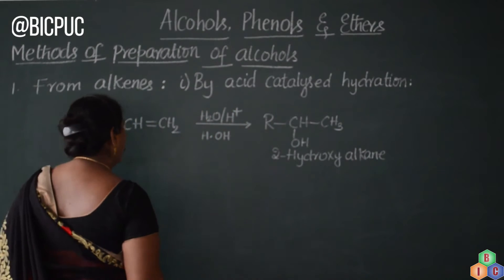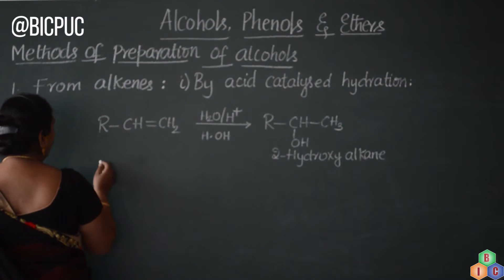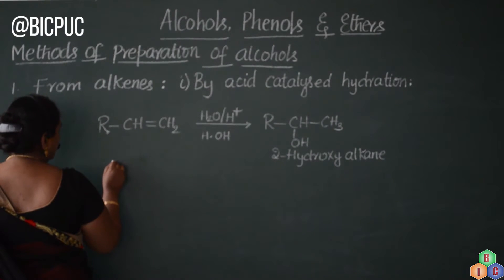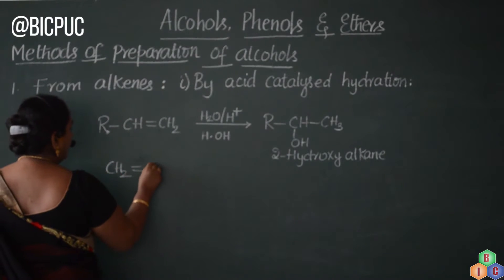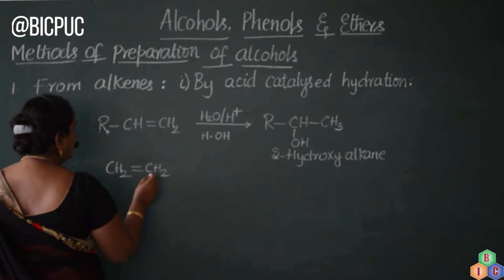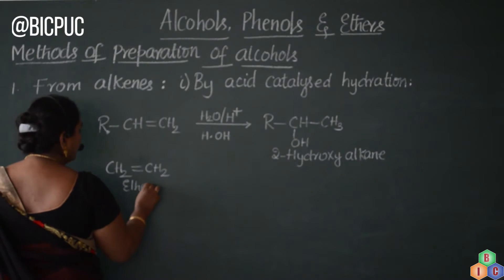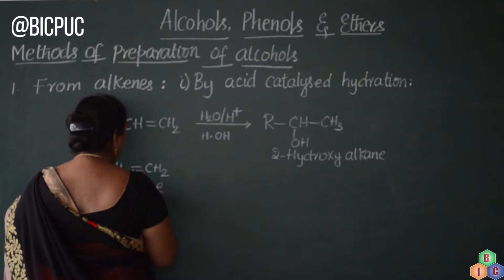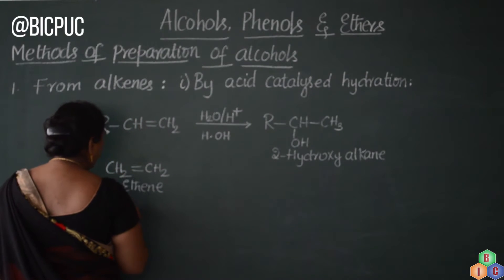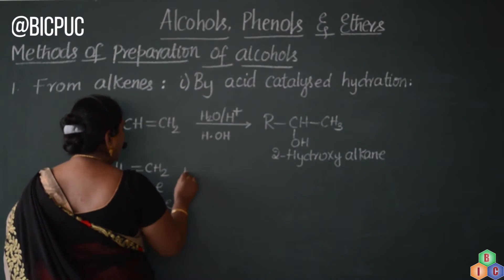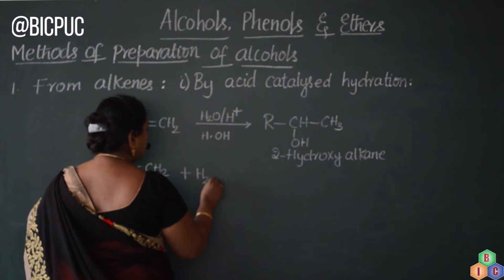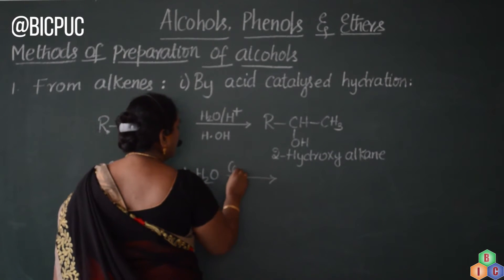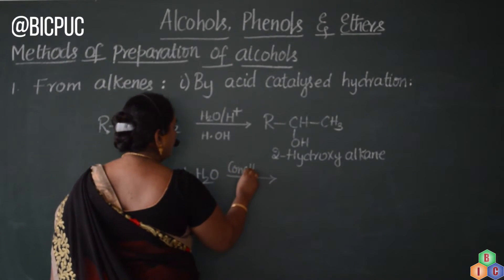Now let me take an example to illustrate this. Let me replace R with H, so the starting material is CH2=CH2. This is ethene — ethene is its IUPAC nomenclature, and ethylene is its trivial nomenclature.